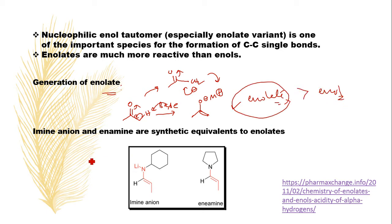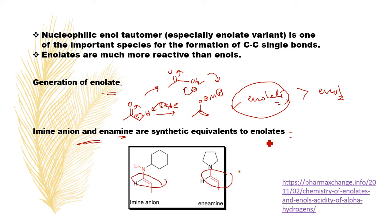There are alternative species for enolates — that is imine anion and enamines. These two are the synthetic equivalents to enolates. Detailed studies will be discussed in further enolate reaction topics.